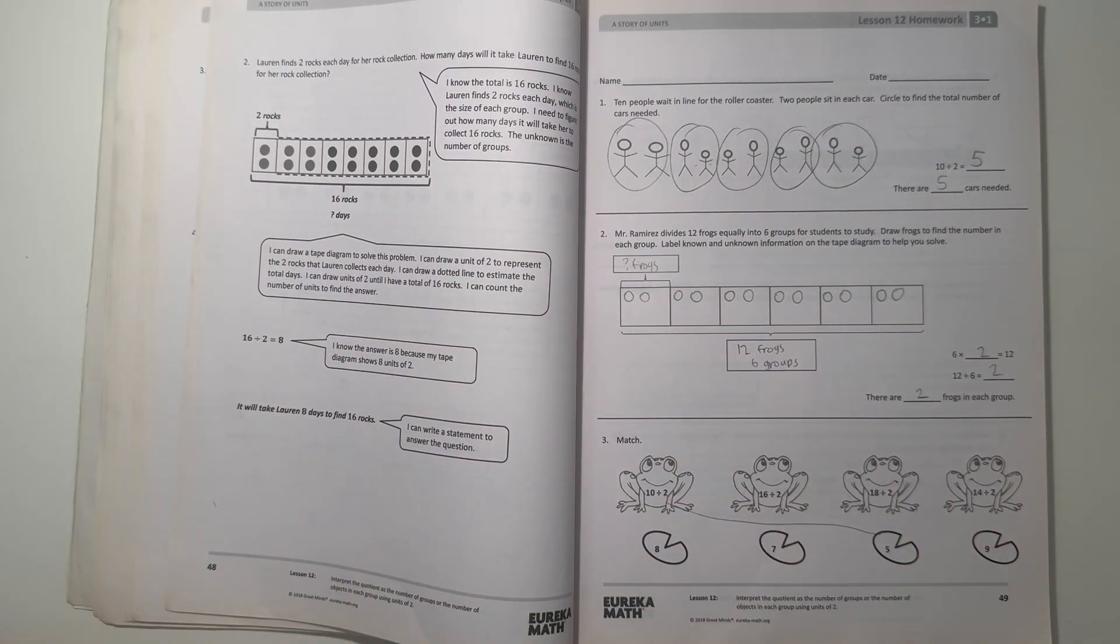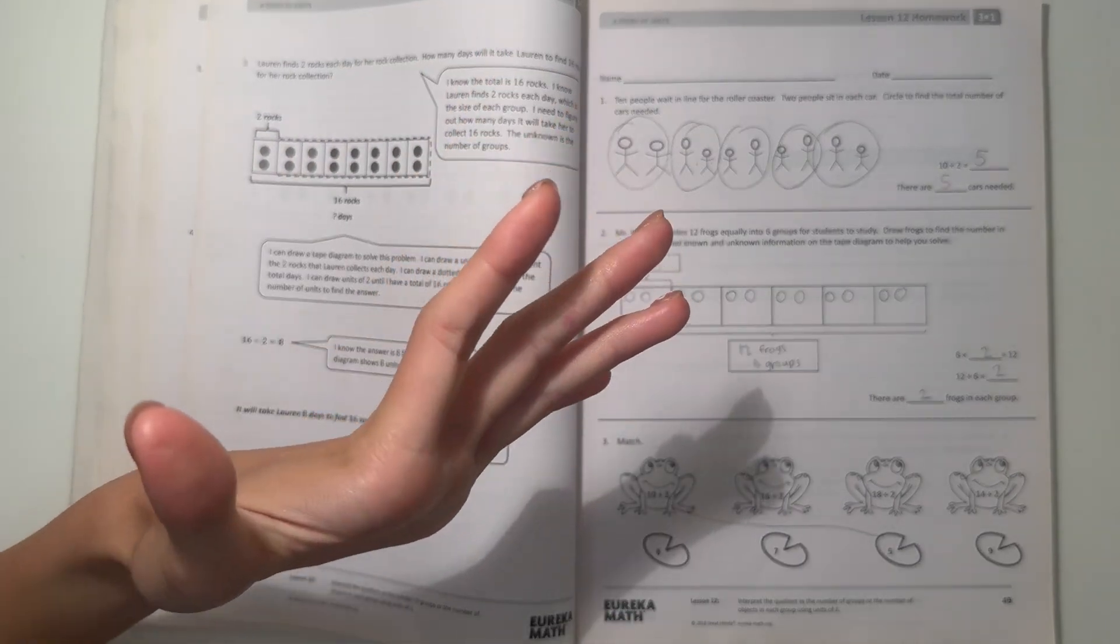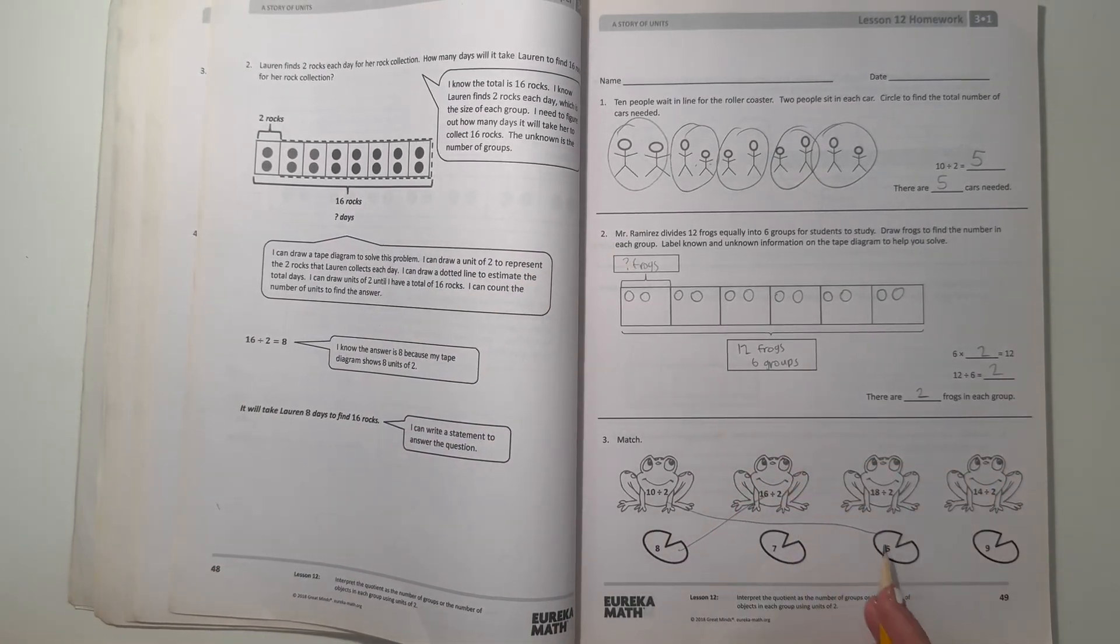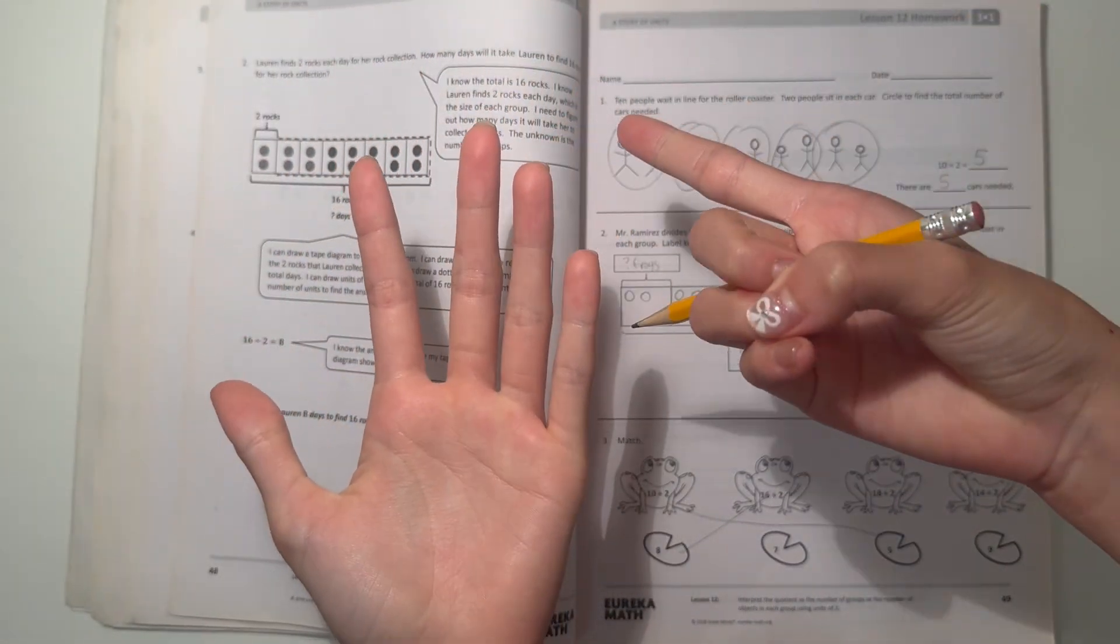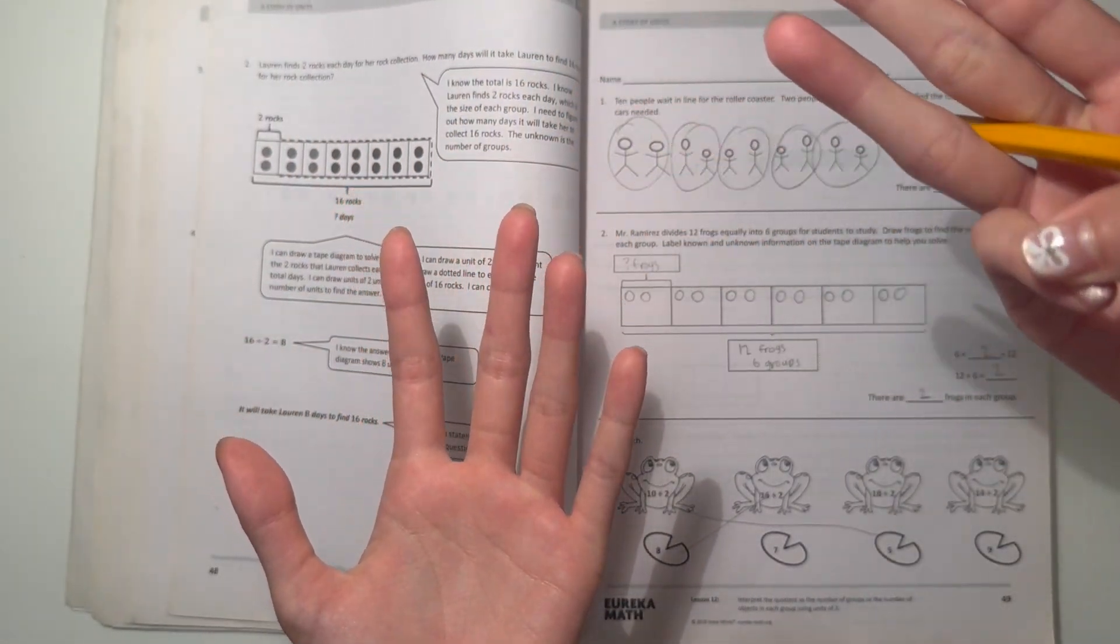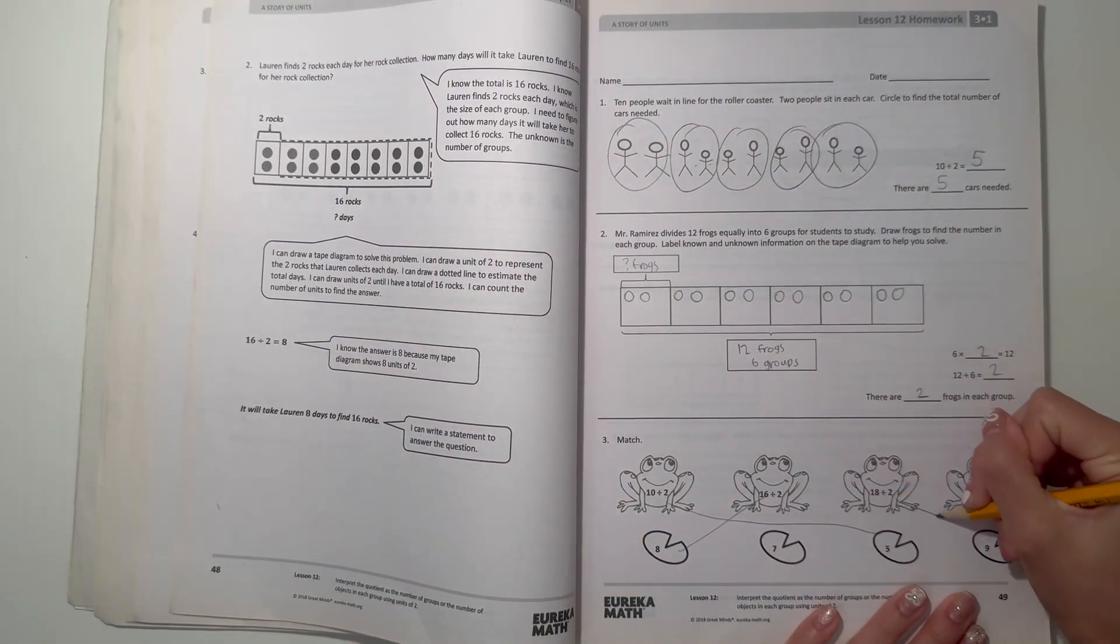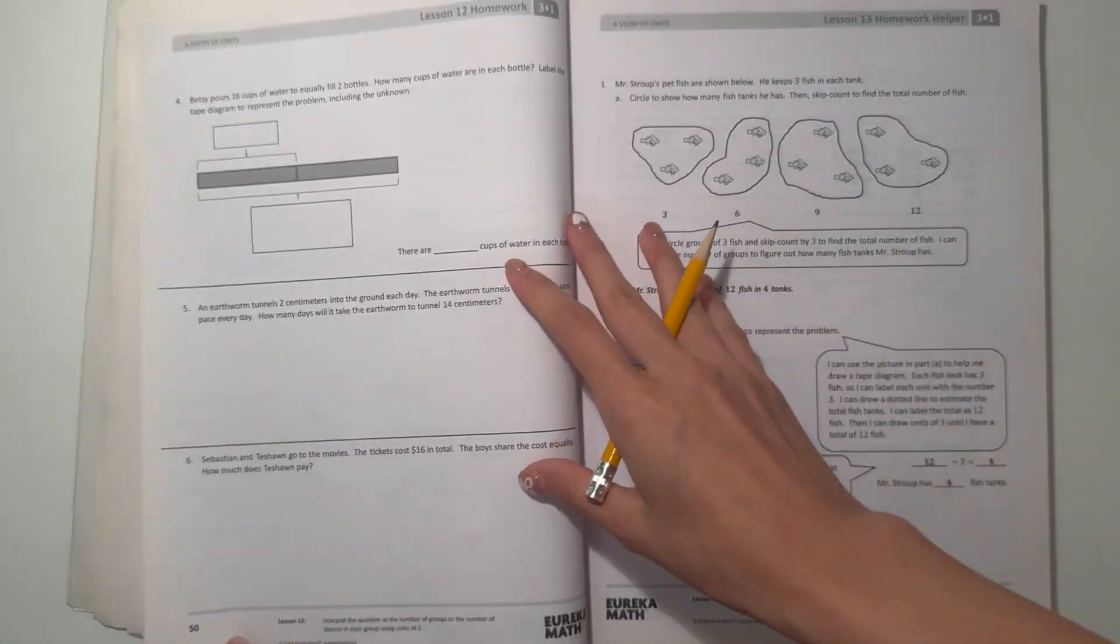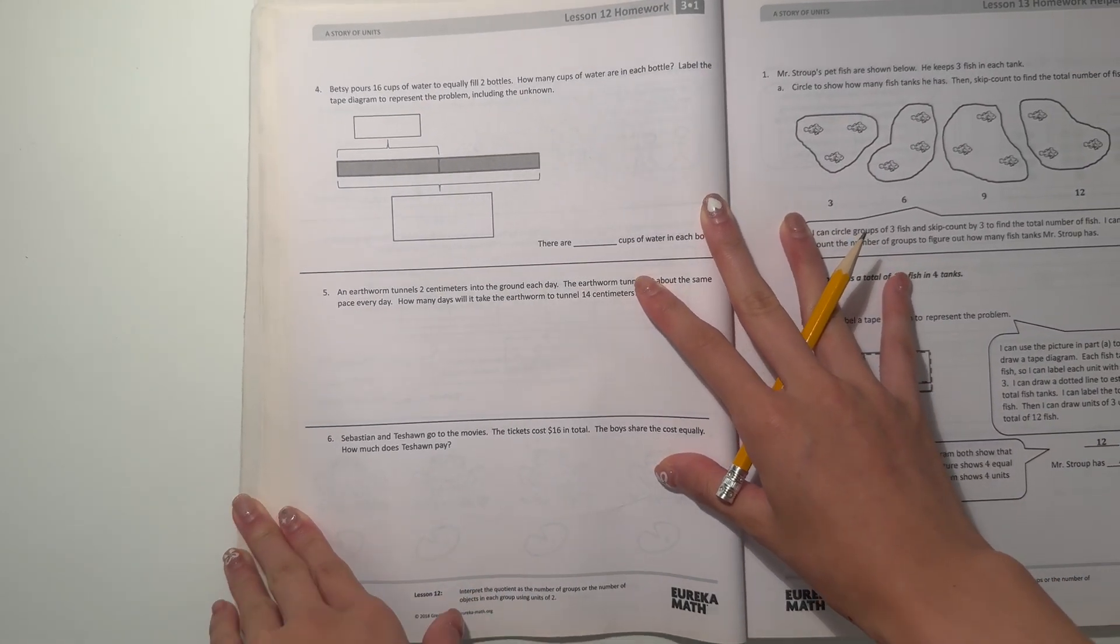And then 6 divided by 2. 2, 4, 6, 8, 10, 12, 14, 16, 18. So that'd be 9. And then 14 divided by 2, that'd be 7, 10. Alright, next page.